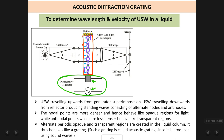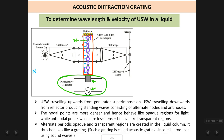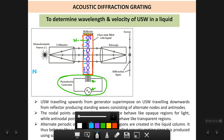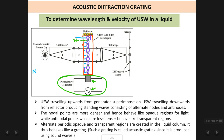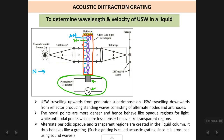At every nodal point — the intersection points of the waves — the density of the liquid is large. The nodal points are regions of more density.